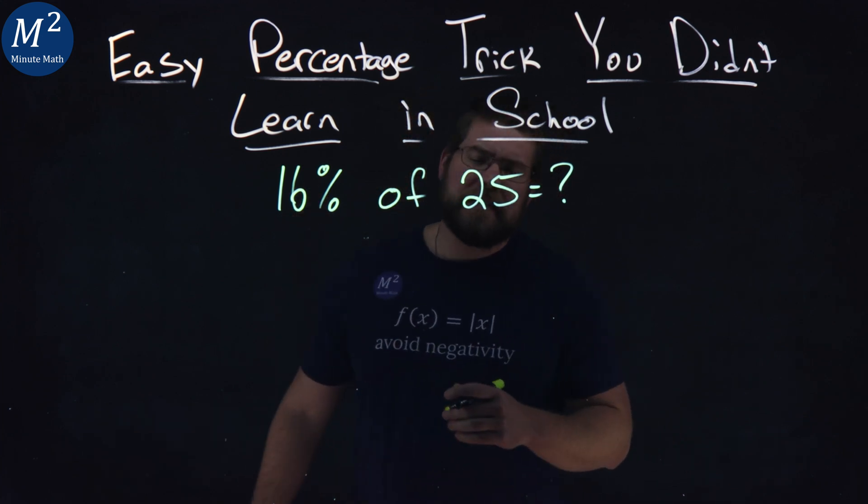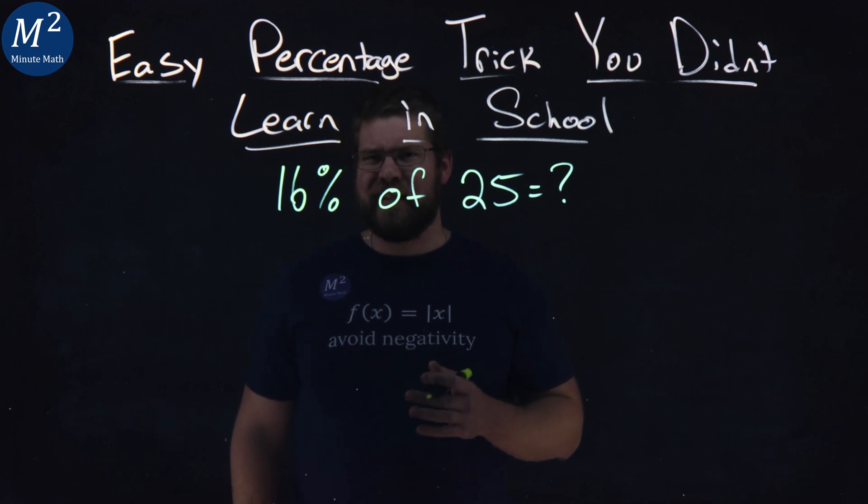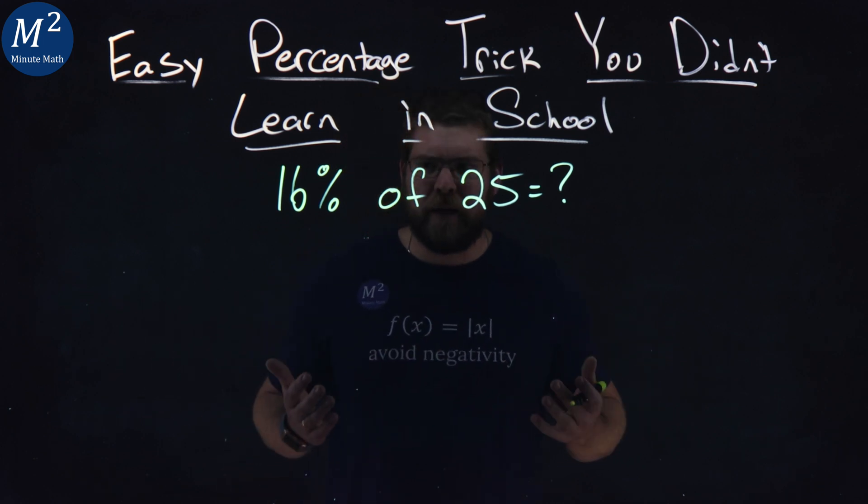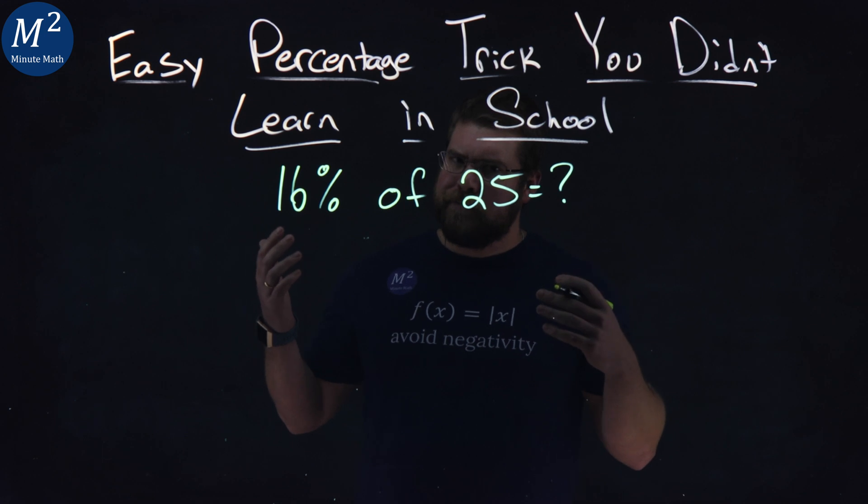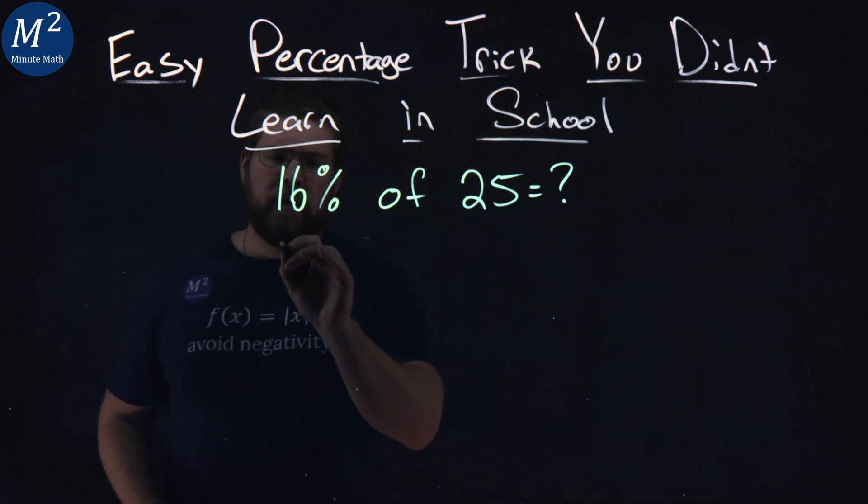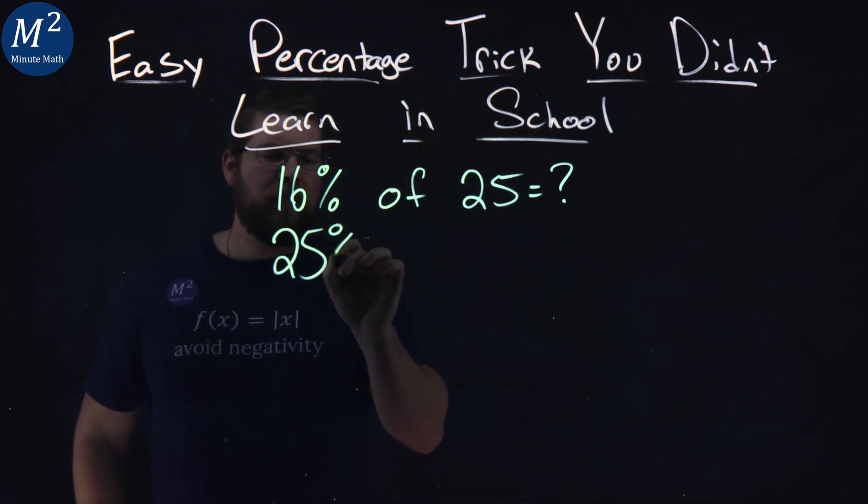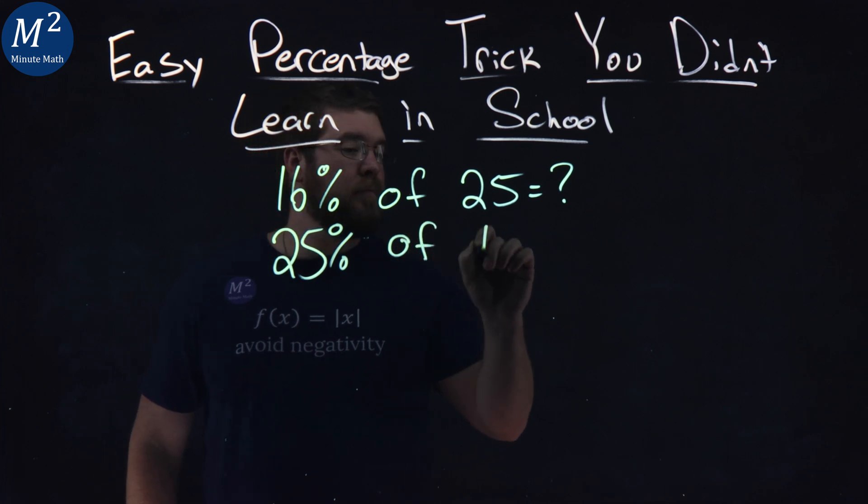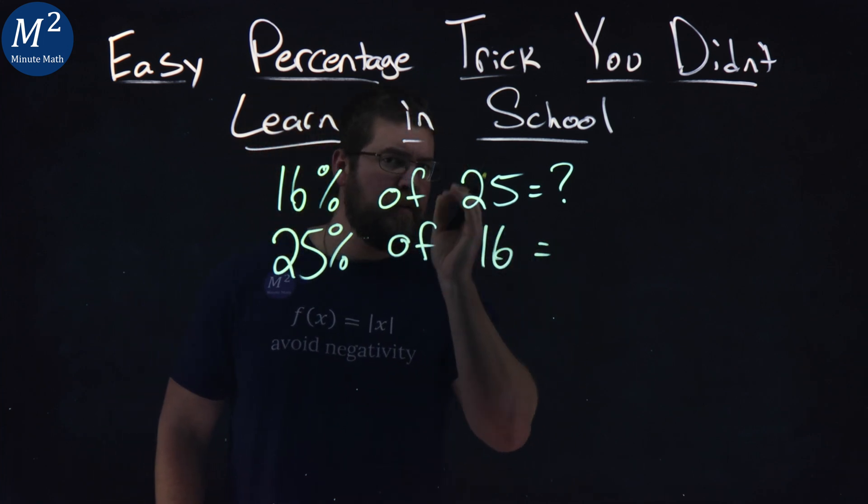We got 16% of 25. That's a difficult percent to do. I don't know. Why don't I flip it around? That's the same thing as saying, what is 25% of 16? Same exact question.